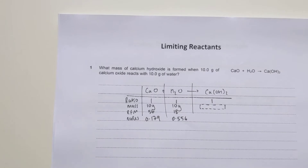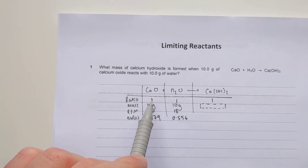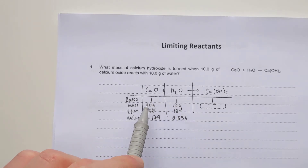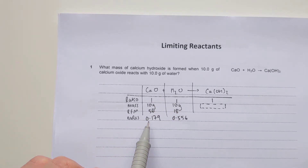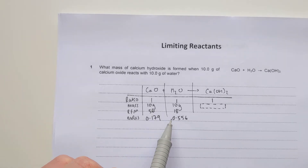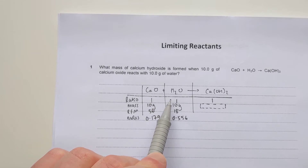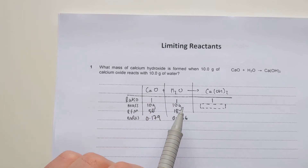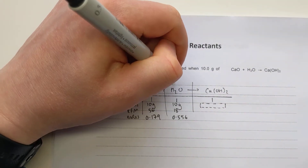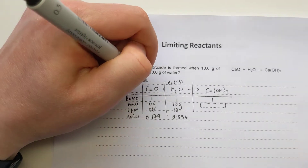Now for the tricky step of any limiting reactant question: I have to pick the correct moles value to use to work out the moles of the product. It's a bit more straightforward with a one-to-one ratio - I can just pick the smaller one as the limiting reactant. Comparing: 0.179 moles of calcium oxide versus 0.556 moles of H₂O. Because one of this reacts with one of this, the smaller one runs out first. So H₂O is the excess reactant and calcium oxide is the limiting reactant.